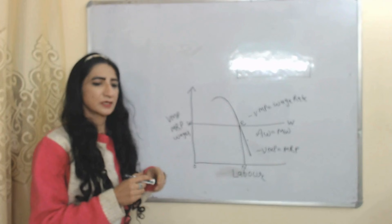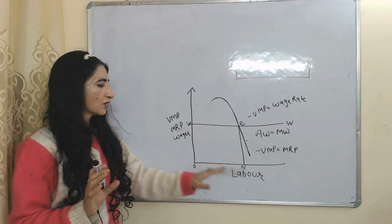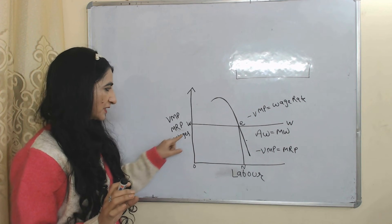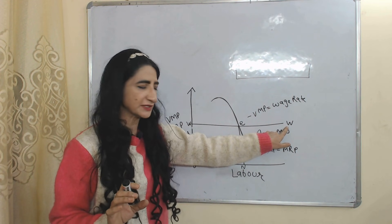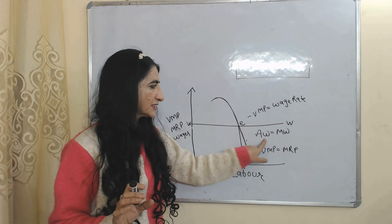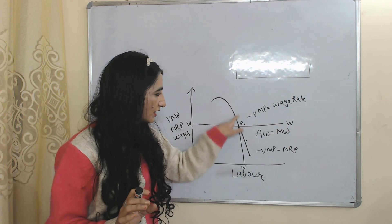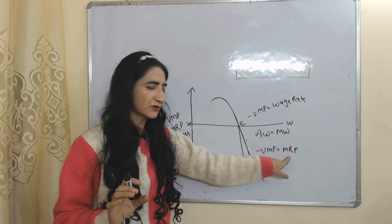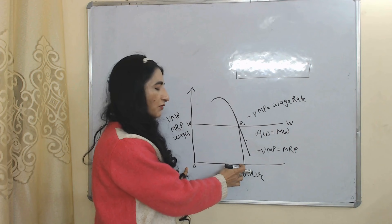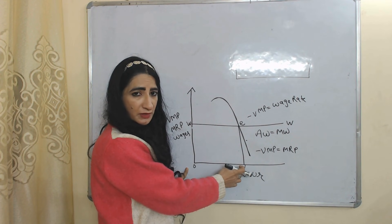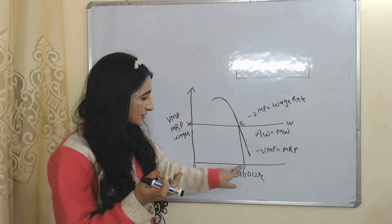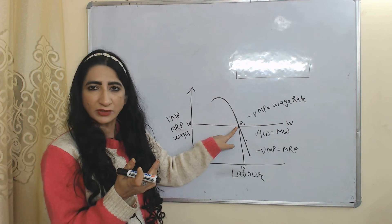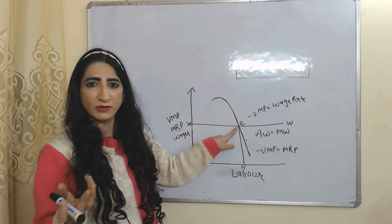Now we look at the diagram. On the x-axis we have labor; on the y-axis we have VMP, MRP, and wages. The horizontal line WW represents wages — AW means average wages and MW is marginal wages. The downward-sloping curve represents VMP, and since VMP equals MRP in this theory, the firm will hire ON amount of labor. At point E, the VMP of labor equals the wage rate, making E the maximum profit point.